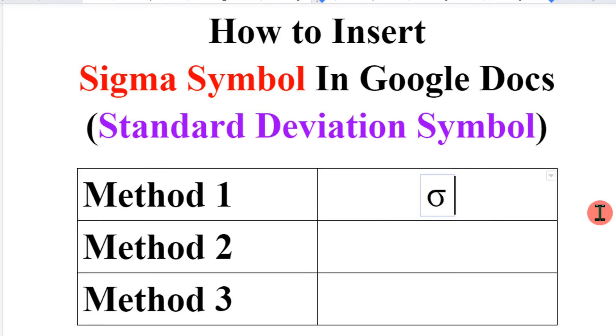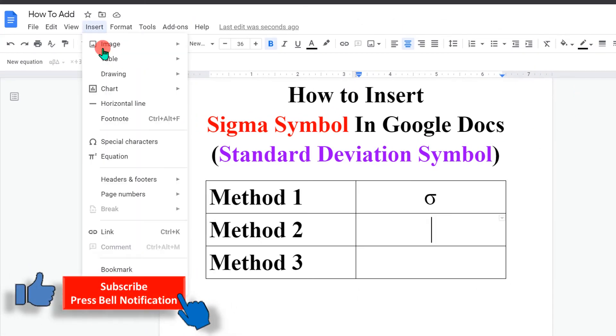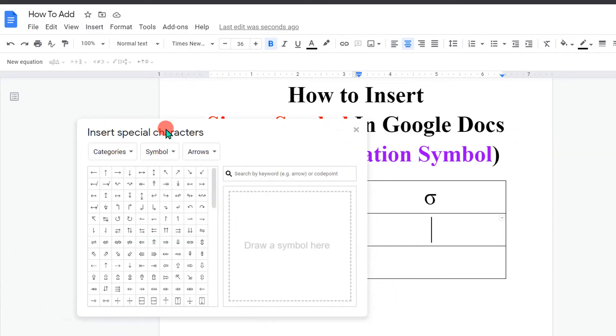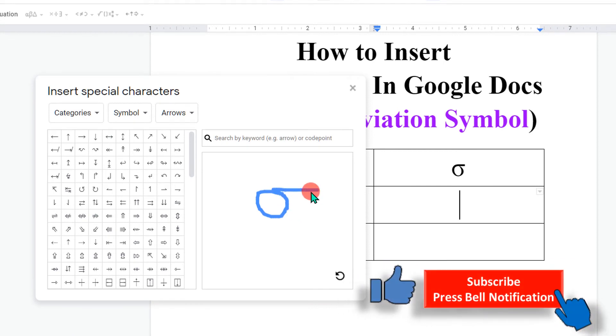In the next method, go to the Insert option and click on Special Characters to open the special character window. Here you can either draw the sigma symbol and it will show you the sigma symbol,